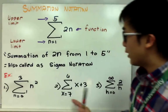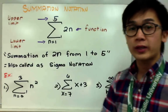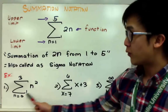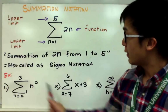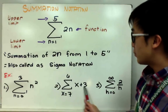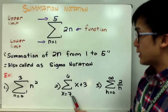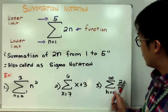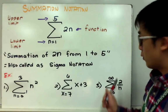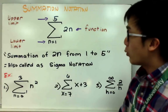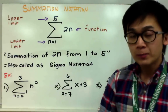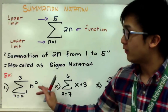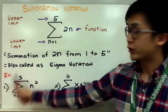Here are some examples of sigma notation we're going to be working on today: the summation of n squared from 0 through 3, the summation of x plus 3 where x goes from 7 through 6, and the summation of 2 over h from 0 through positive infinity. We're going to learn how to evaluate or simplify summation notation to give us a numerical value.